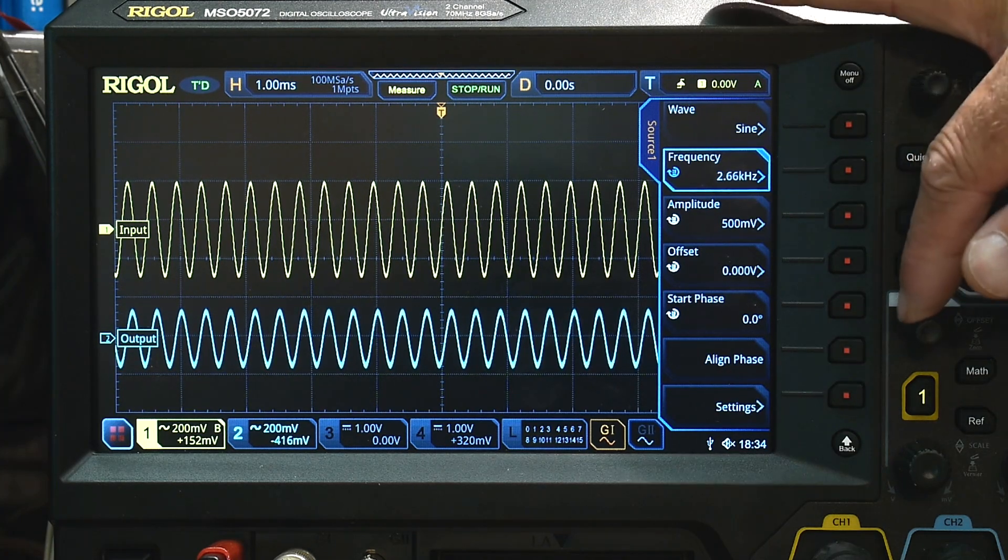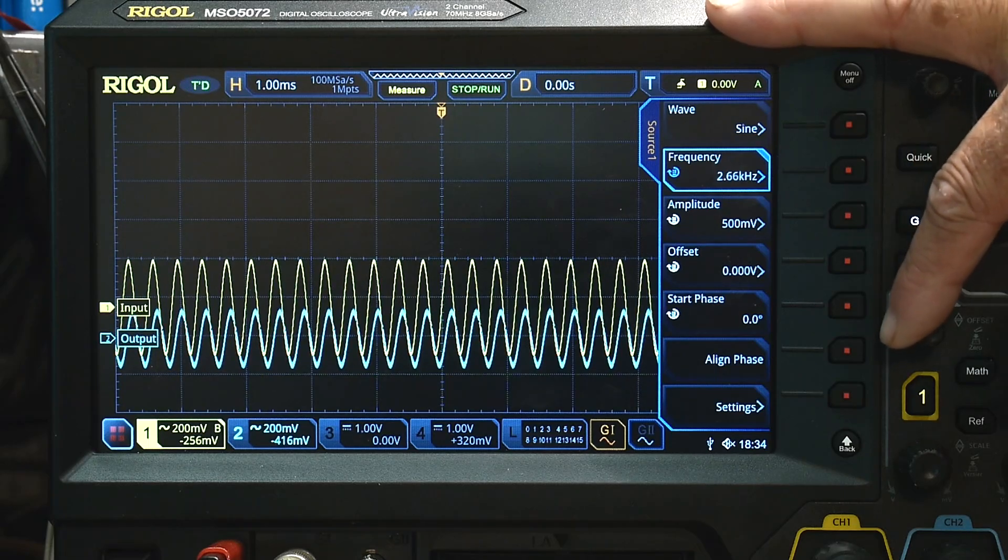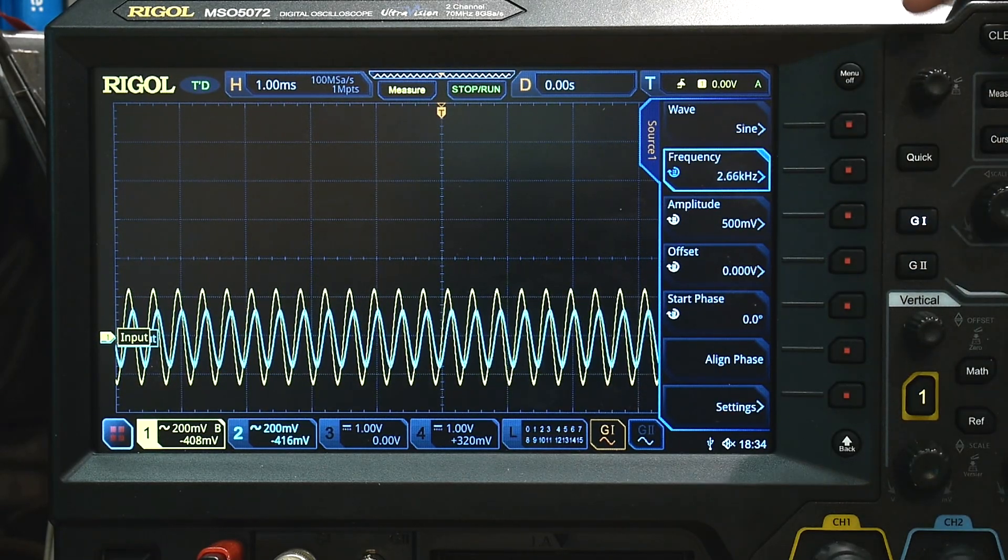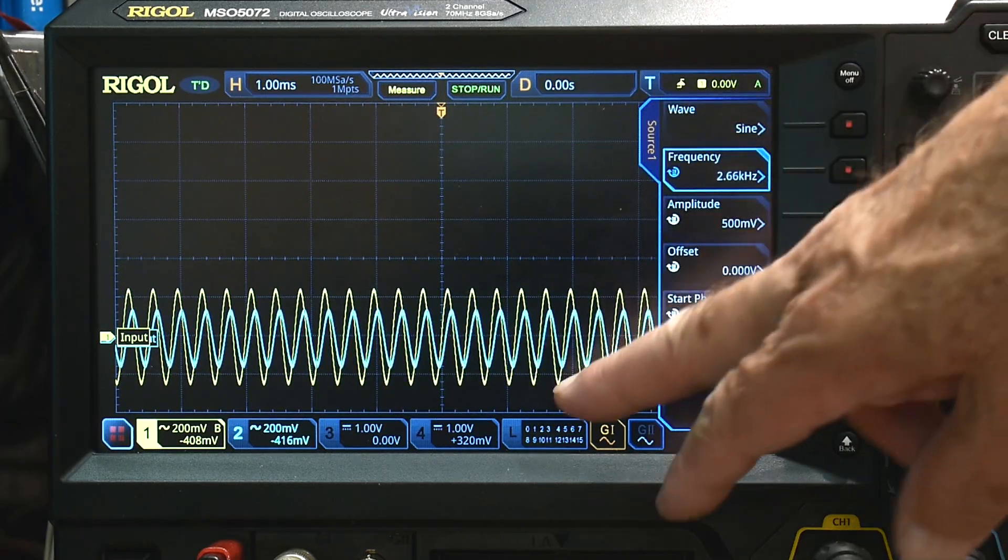The output is starting to get attenuated at 2.6 kilohertz, it's starting to go down. And we could kind of compare these two things, so we could say, oh yeah, the phase is a little bit different. It's not exactly...